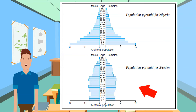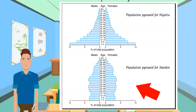The pyramid for a more economically developed country has a narrow base and straight sides. Low birth rates over a long period mean that there are relatively few young people, and death rates are high only in extreme old age. Look at the bottom pyramid for Sweden.